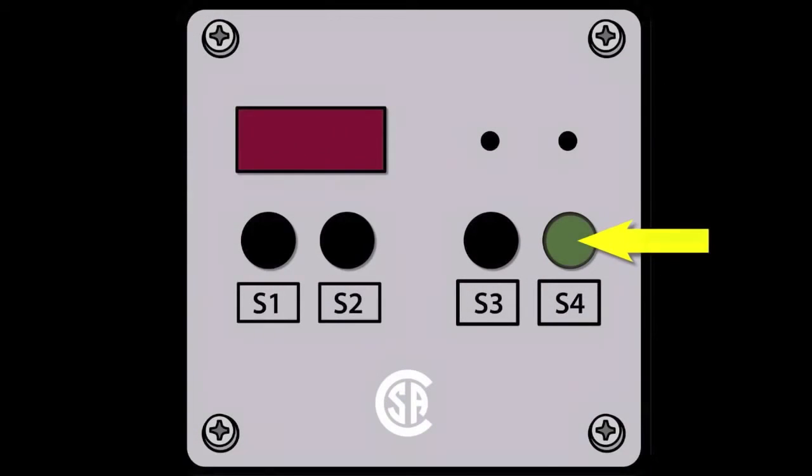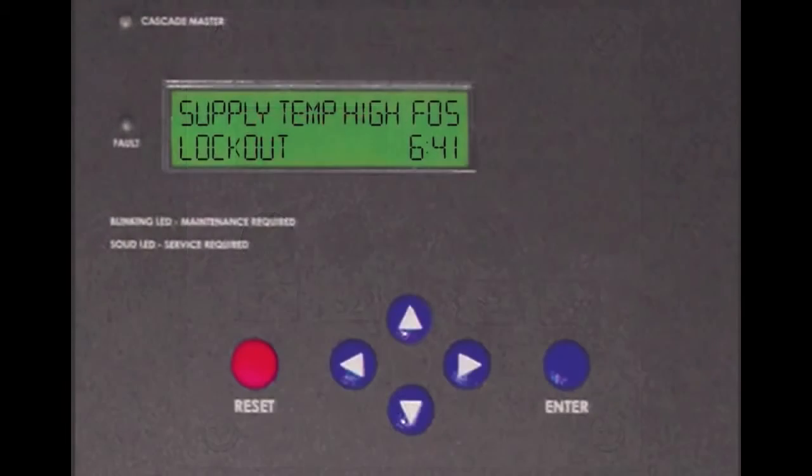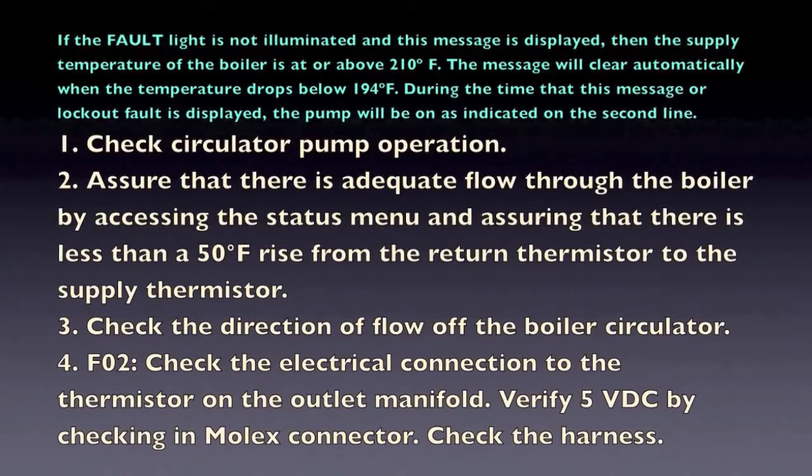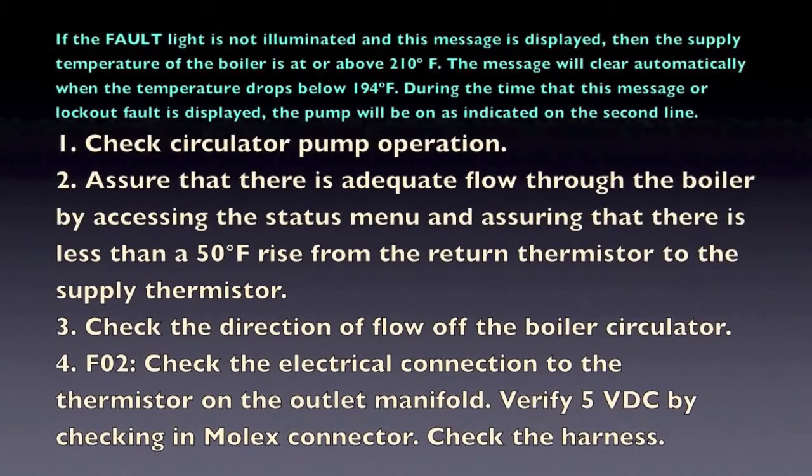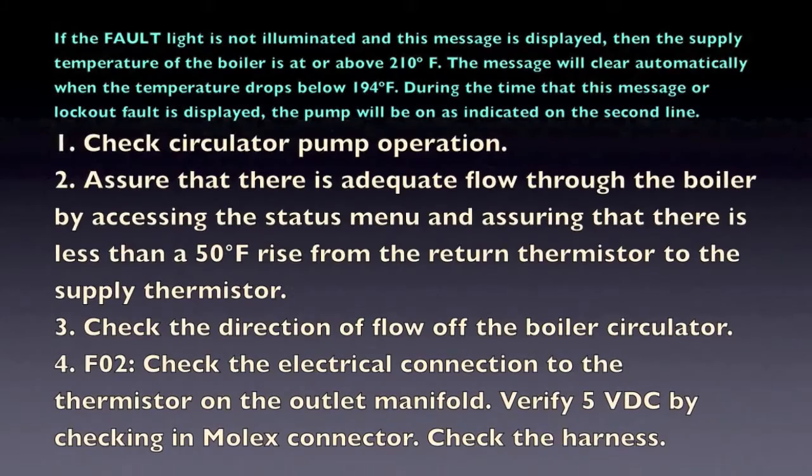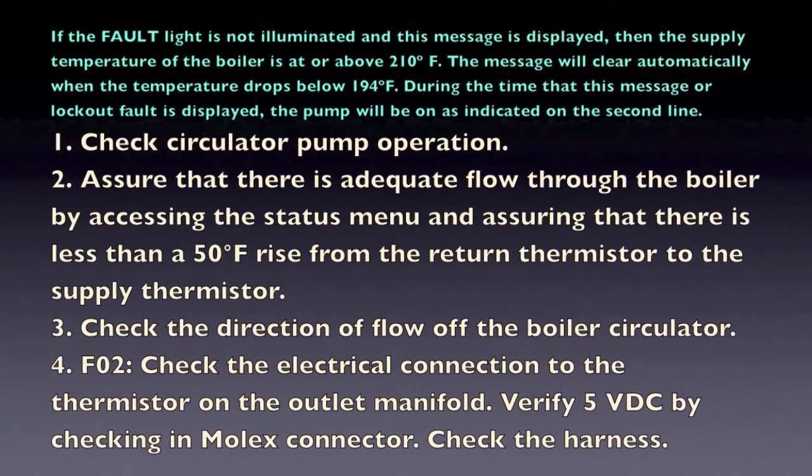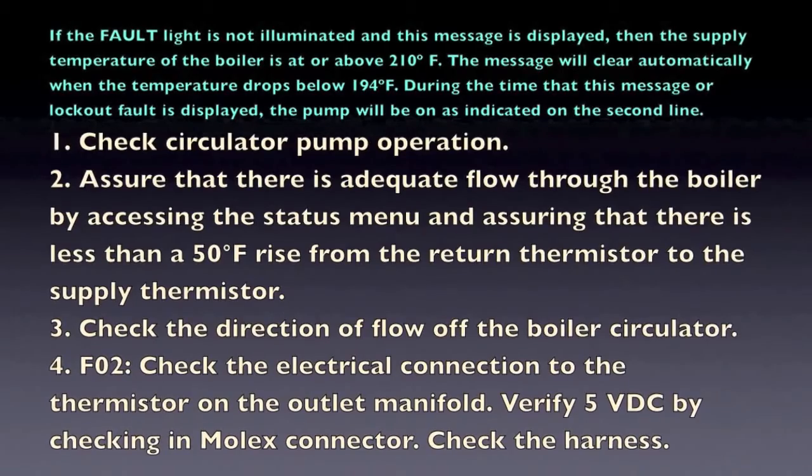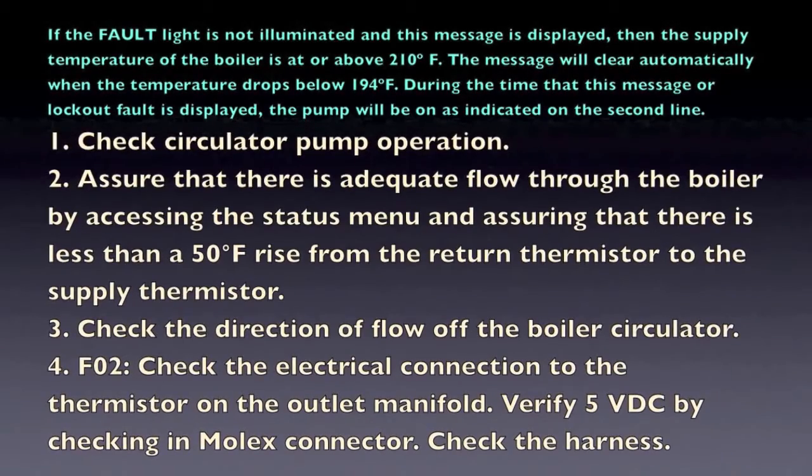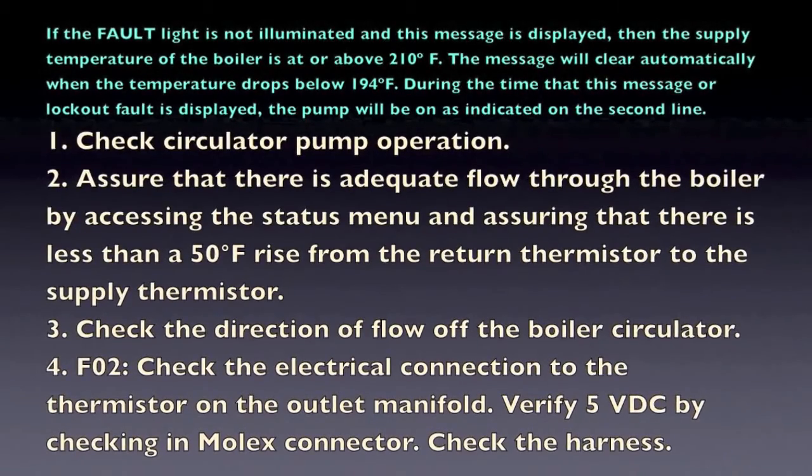If the fault light is not illuminated and the message is displayed, then the supply temperature of the boiler is at or above 210 degrees F. The message will clear automatically when the temperature drops below 194 degrees F. During the time that this message or the lockout fault is displayed, the pump will be on as indicated on the second line.